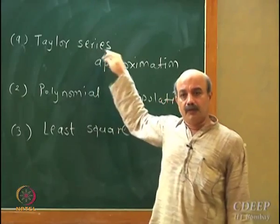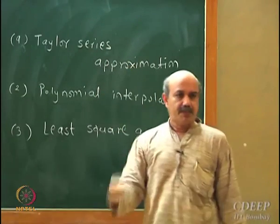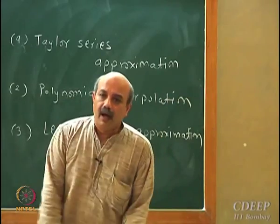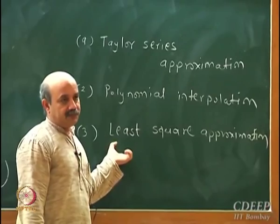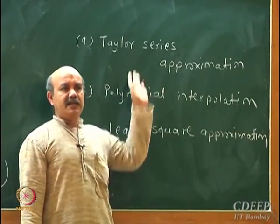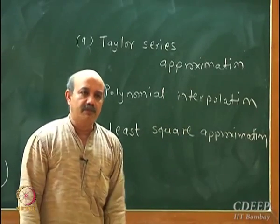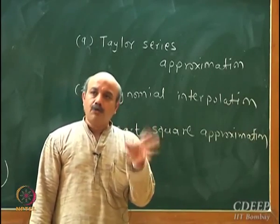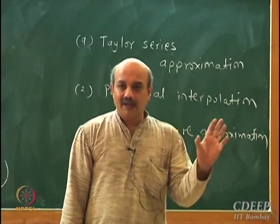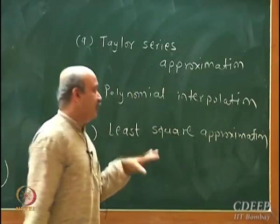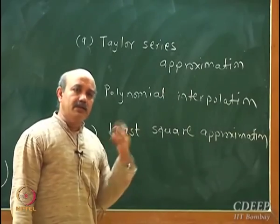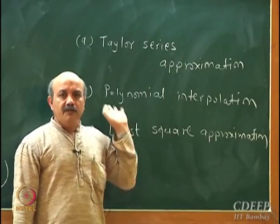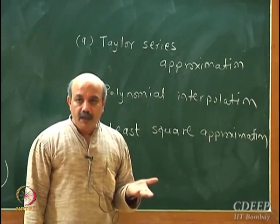There are three different ways by which we are going to construct polynomial approximations. First is Taylor series approximation — you are familiar with Taylor series expansions and we will briefly revisit them. Then we move on to polynomial interpolation. The third is least squares approximation. If you understand these three basic concepts, most of the problem transformations will be clear to you — how a problem is transformed to a computable form.